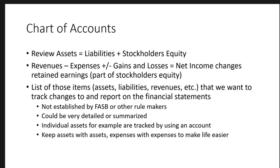Do we want trucks and cars separate, or do we want to do vehicles together? Do we want buildings and land separate, or do we want to do them together? The FASB does not tell us — the rules don't specify what you need to track, what assets, liabilities, revenues, or expenses to use. You could have hundreds of different accounts on your chart of accounts. For instance, our building on main street could be one account and our building on the other side of town could be a different account, or we could lump them together as buildings.